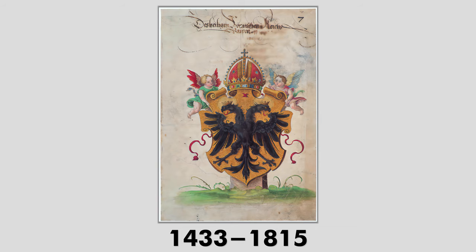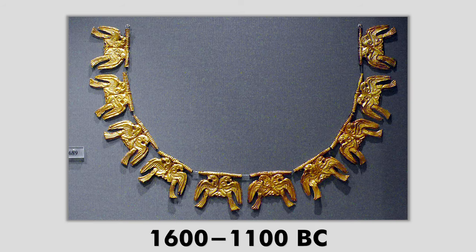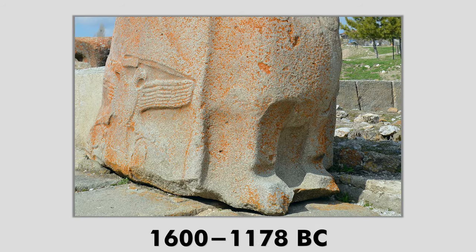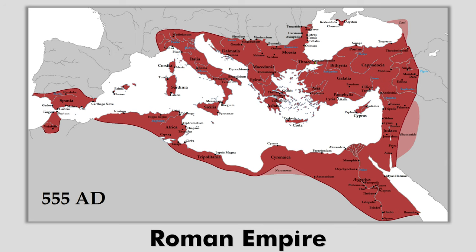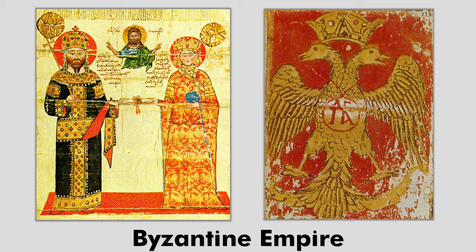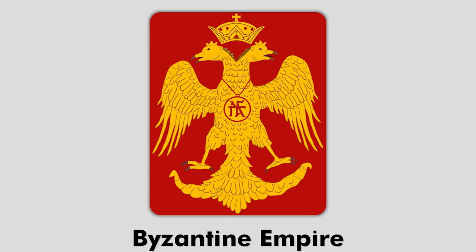The double eagle is a much older symbol dating back to ancient Greeks and Hittites in the Near East. For the Roman and Byzantine Empire, the use of it represented the empire's dominion over the Near East and the West. For the Byzantine Emperors, it represented both the emperor and the Christian power combined — one head for the civil ruler and one head for the church.